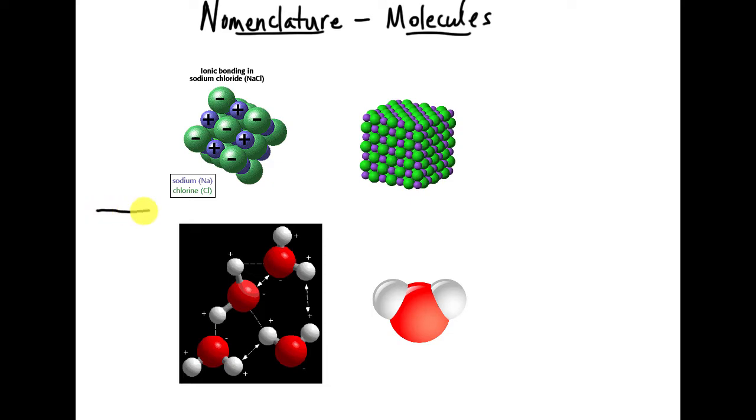Before we get into the naming, just remember that there are two broad classes of compounds. We have ionic compounds and molecular compounds. Remember that this is going to have that metal and a non-metal in here. That's how we're going to tell the difference between our ionic and molecular compounds.